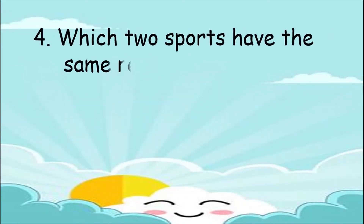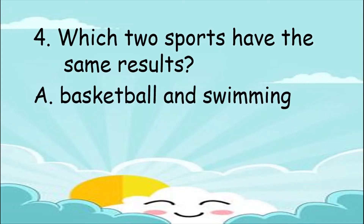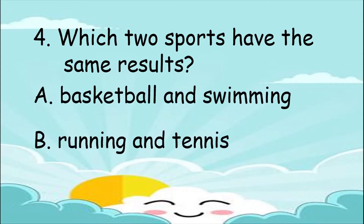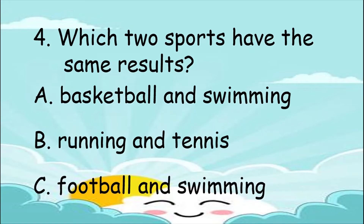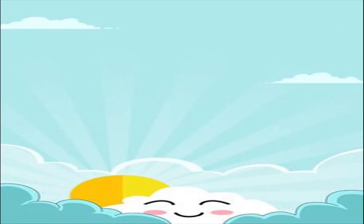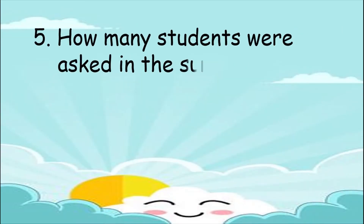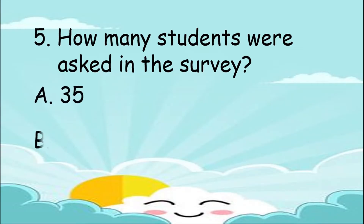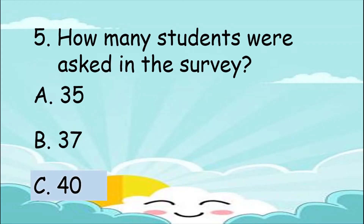For number 4: Which 2 sports have the same results? Is it A. Basketball and swimming, B. Running and tennis, or C. Football and swimming? The answer is football and swimming. For number 5: How many students were asked in the survey? Is it A. 35, B. 37, or C. 40? The answer is letter C, 40.